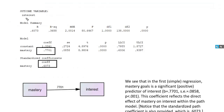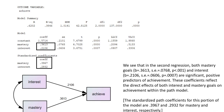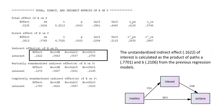The output gives us a couple of regression models that comprise the mediation model, along with total effect model information and total direct and indirect effects. For the first part of the output, the outcome variable is interest, regressed onto mastery. The unstandardized regression coefficient is 0.7701 — that's path A. A standardized path coefficient is also provided. The next regression output has achievement regressed onto both mastery and interest, giving us path B and path C coefficients.